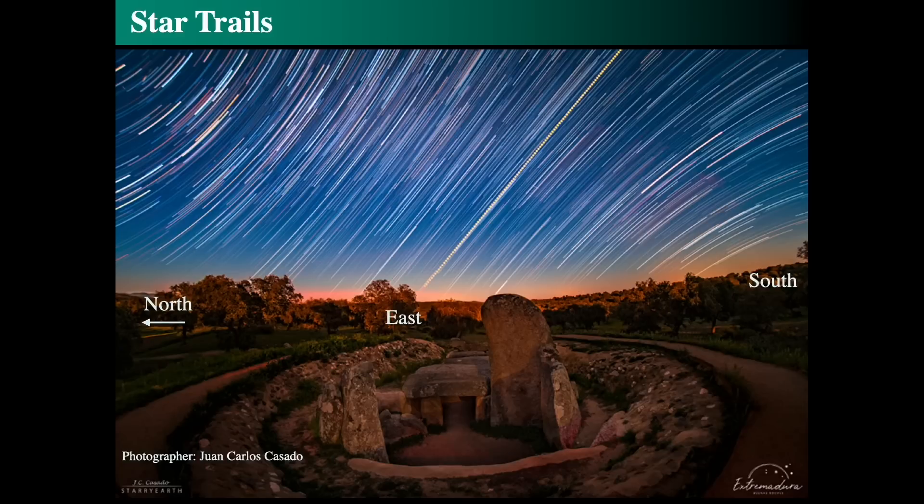Now, let's look east. This photograph was taken by Juan Carlos Casado and published on worldatnight.org. To the left of this image is the direction of the north celestial pole, and to the right is towards the south celestial pole. Directly in the middle is the celestial equator. This looks like this because we've projected a dome onto a two dimensional surface and allowed star trails to happen.